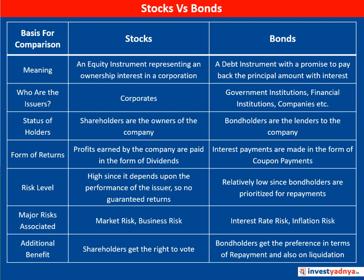Stocks are issued only by corporations, while bonds can be issued by the government, financial institutions, and companies. If you hold stocks, you are called a shareholder and can claim ownership. Bond holders are simply lenders with no ownership rights and no role in decision-making. The return on stocks is the profit earned by the company, distributed as dividends proportional to your shareholding. On bonds, you only receive an interest payment in the form of a coupon payment.